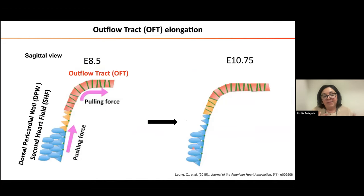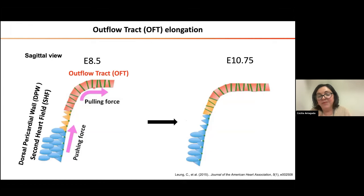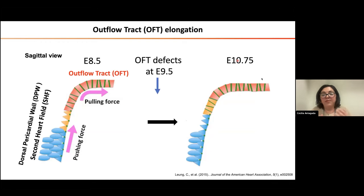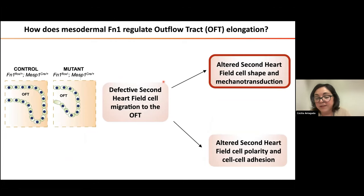How does the second heart field migrate into the outflow tract? It's known that two forces help the cells migrate. One is the pushing force provided by posterior second heart field cells, which through intercalation pushes the anterior second heart field cells into the outflow tract. There are also pulling forces generated by cell-cell adhesion, which are needed for the migration of these cells. All this process occurs between E8.5 and around E10.5. My mutant embryos show a defect in outflow tract elongation in the middle of this process, around E9.5. We hypothesized this was because second heart field cell migration into the outflow tract was affected, possibly due to changes in cell shape, mechanotransduction, cell polarity, or cell-cell adhesion.